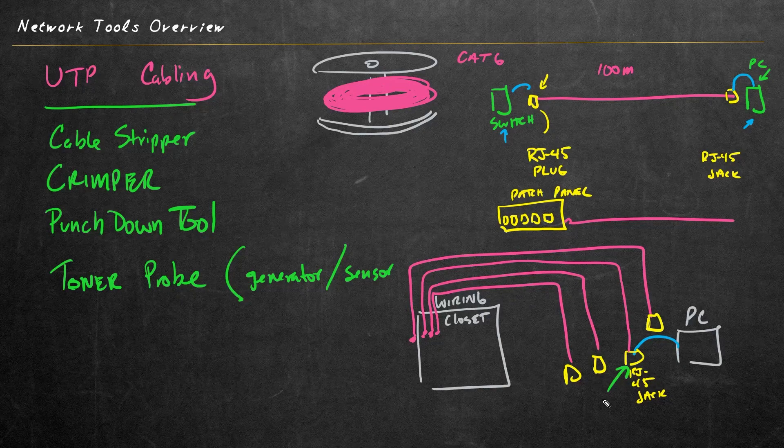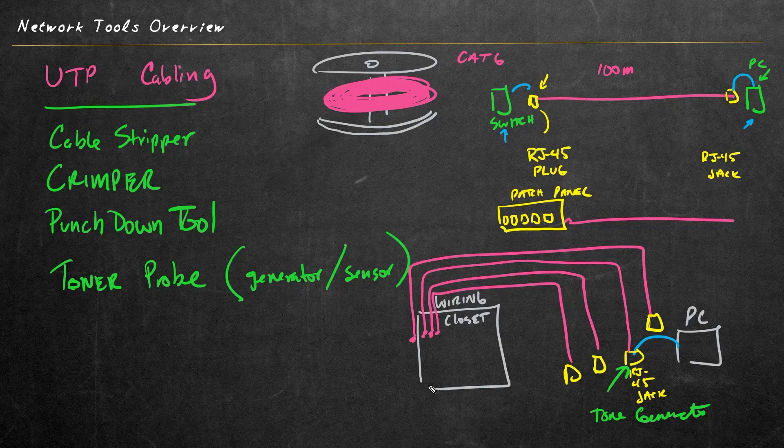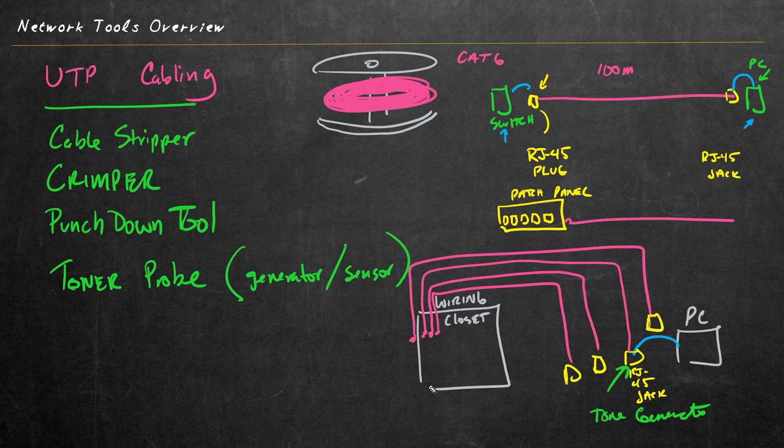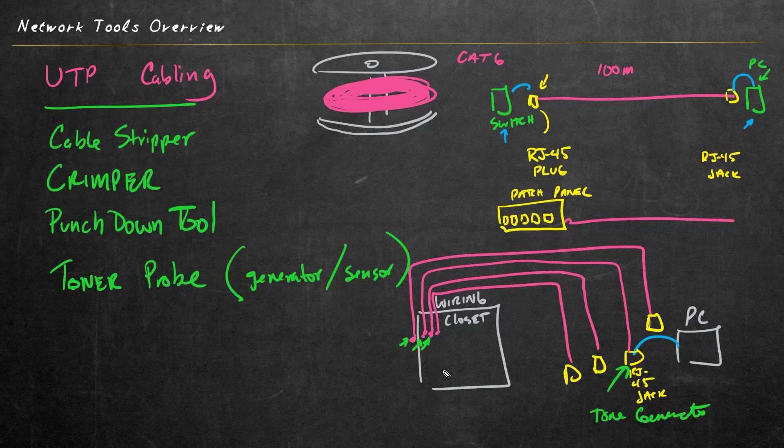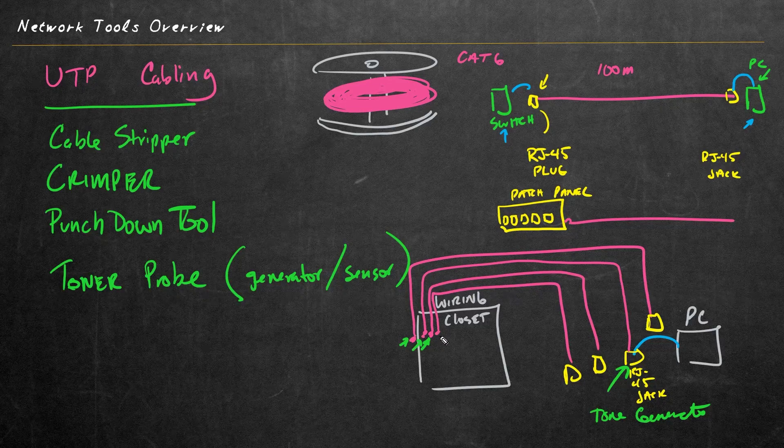So we take off the PC, we put in the generator, and then we take the sensor component, which oftentimes has a little sharp end on it so you can point at the cables, and we start touching it. We touch it here and here and here, and when it starts making an audible noise, we know that we are either close to or on that cable. And then with a little other testing, we can verify exactly which cable it is.